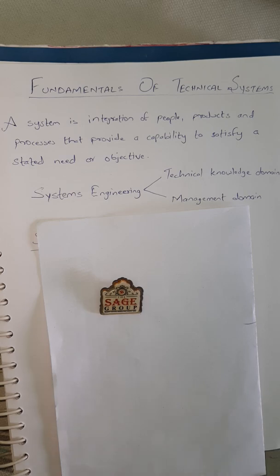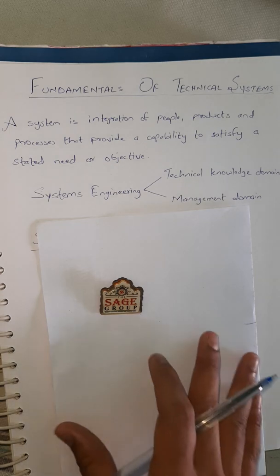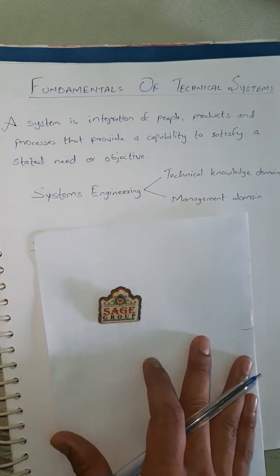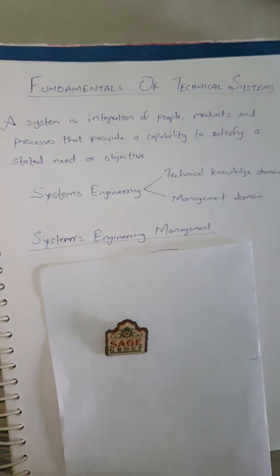In summary, systems engineering is an interdisciplinary engineering management process that evolves and verifies an integrated life cycle balanced set of system solutions that satisfies customer's needs. Today we are going to focus mainly on systems engineering management.